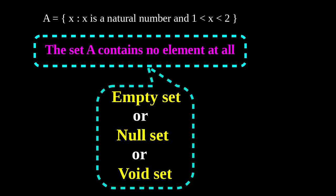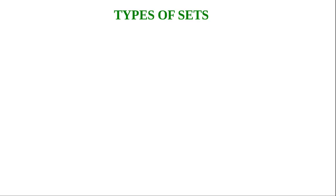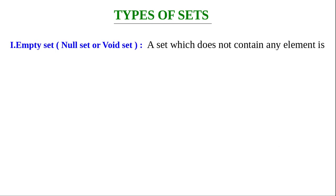The set which does not contain any element is called an empty set, or null set, or void set. The symbol to represent the empty set is φ (phi) or simply a set notation with empty braces. Write this into your notebook. First type: empty set, or null set, or void set — a set which does not contain any element.